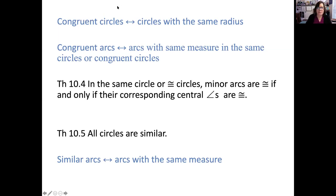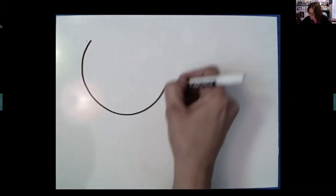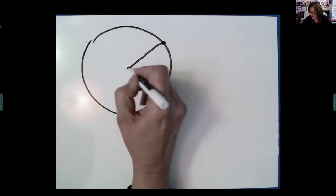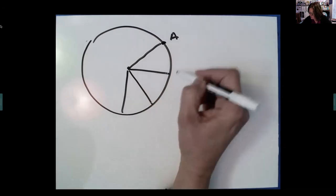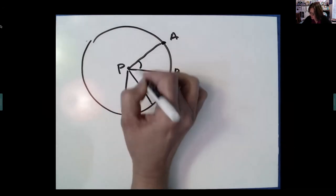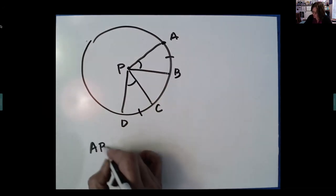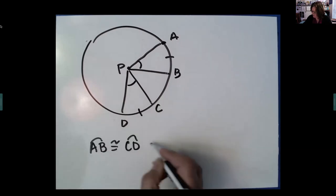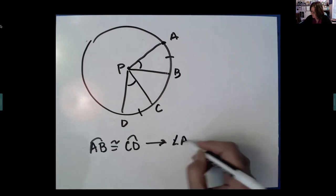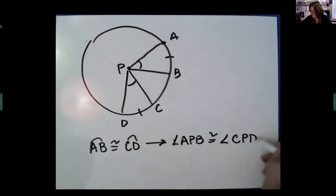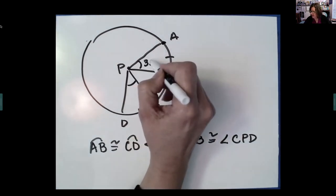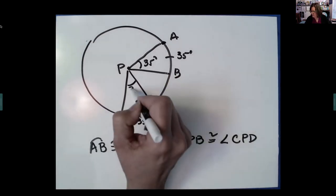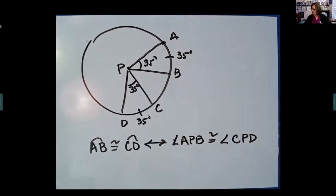For theorem 10-4: if arc AB is congruent to arc CD, then angle APB must be congruent to angle CPD — and the converse is true as well. It makes sense: if this angle measure is 35, that arc is 35; this angle is 35, that arc is 35 — those are congruent.